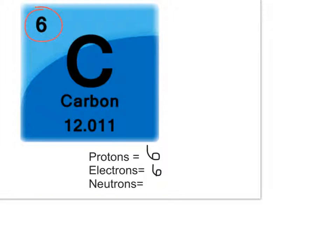To figure out how many neutrons, we need to take the atomic mass, which in carbon is approximately 12, and we subtract the number of protons, so 12 minus 6 is 6, so there are also 6 neutrons in carbon.